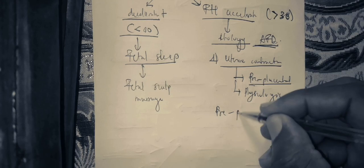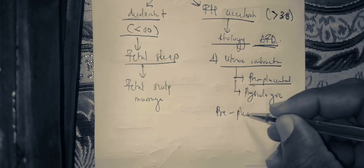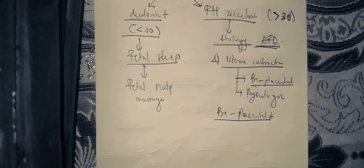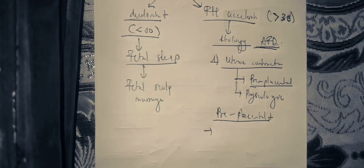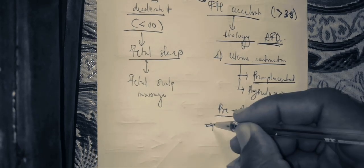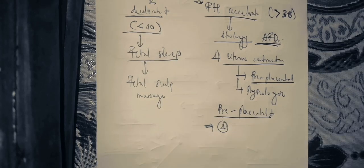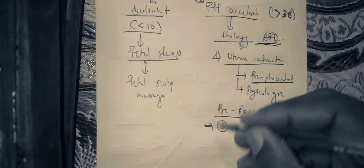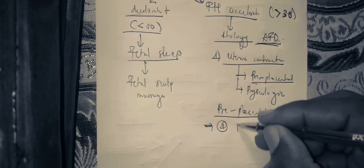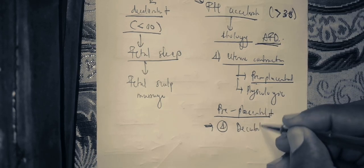We need to know the causes of pre-placental acute fetal distress — these are causes that reduce blood supply to the placenta before it reaches the placenta, usually related to the mother. In pre-placental acute fetal distress, the first case is the decubitus position of the mother.